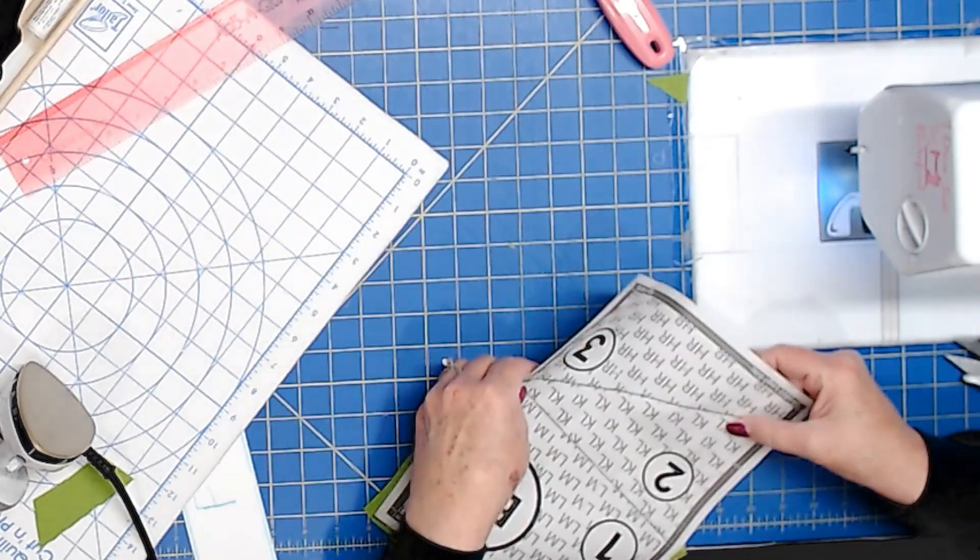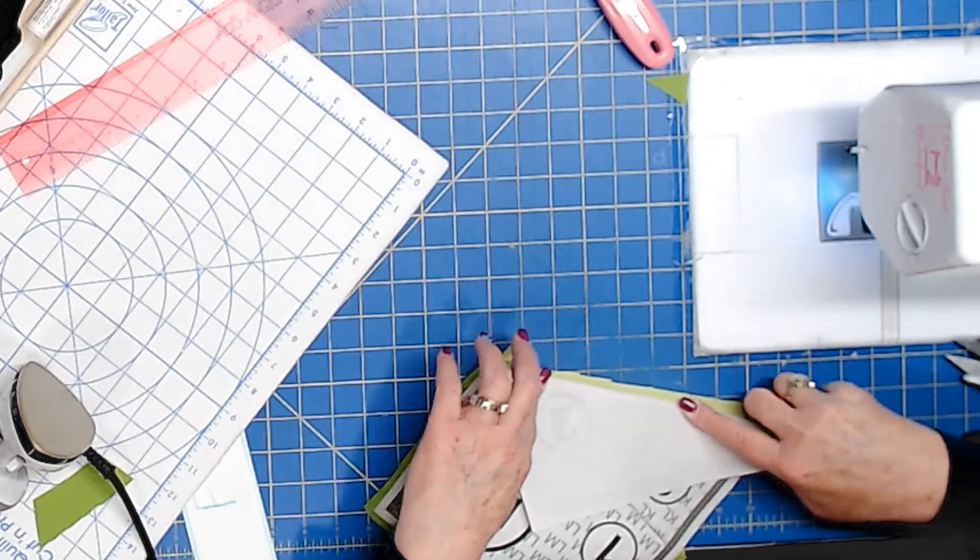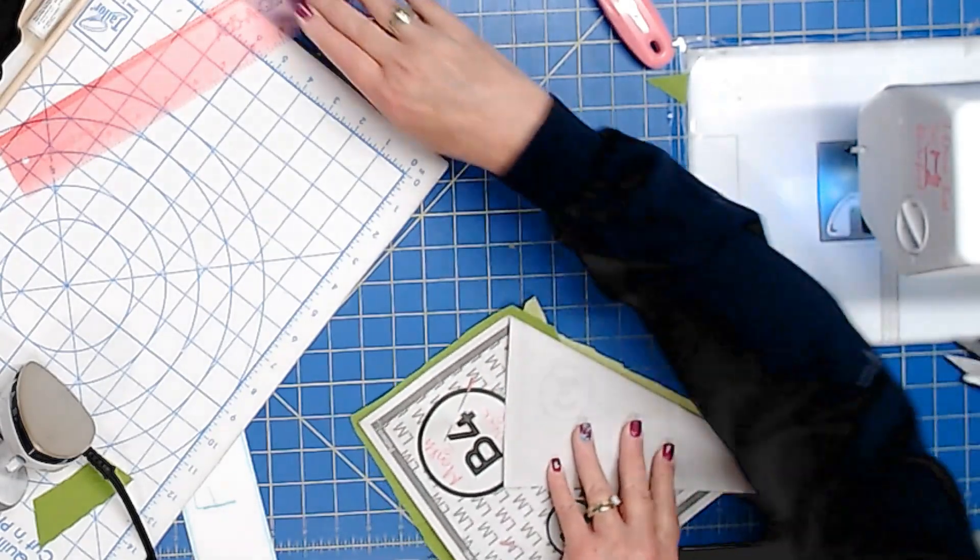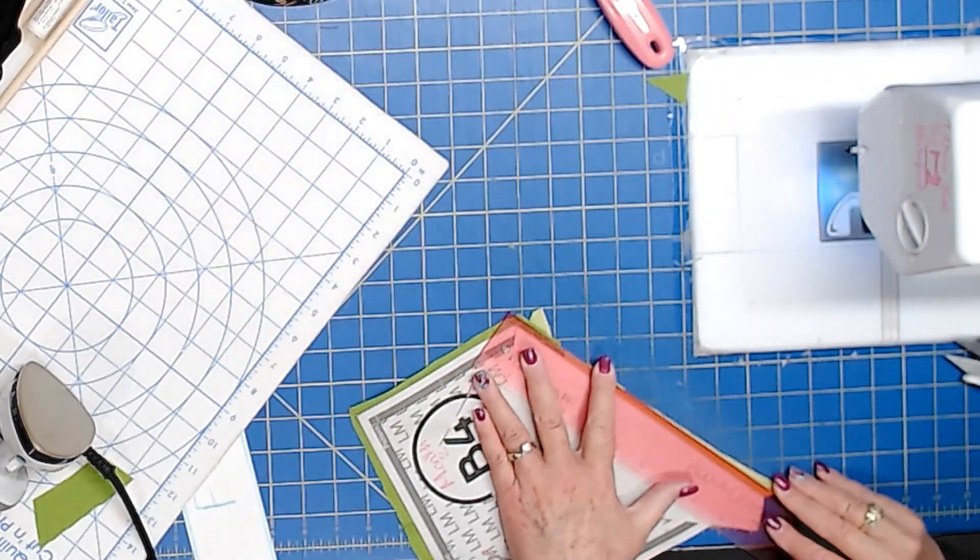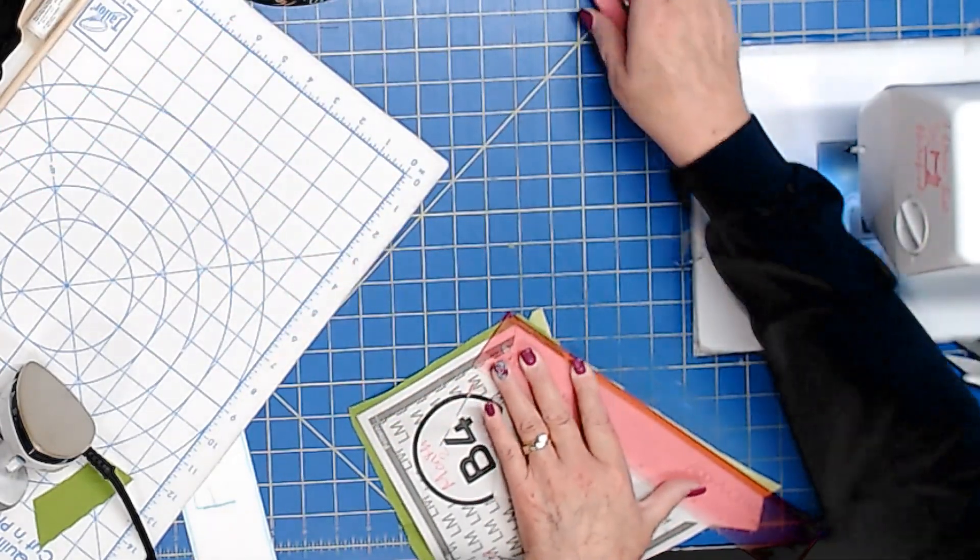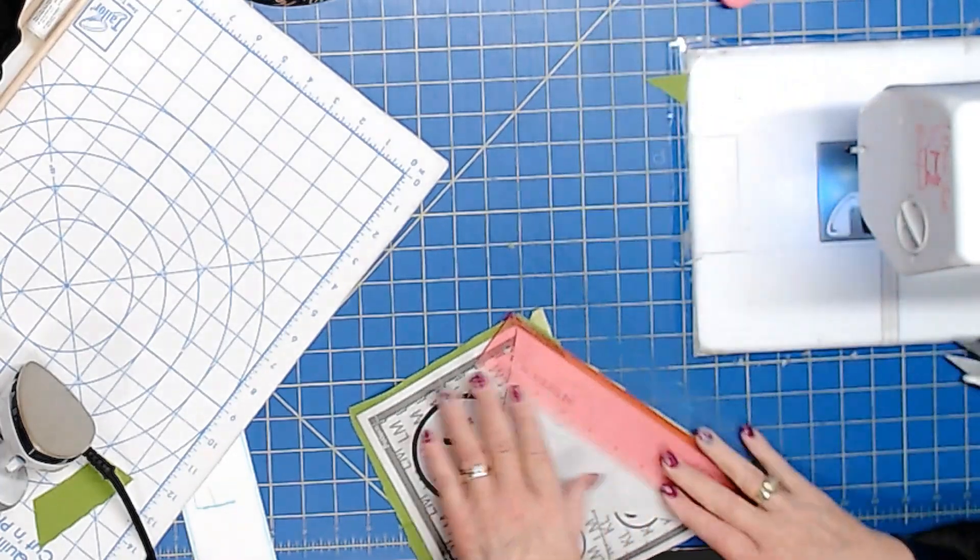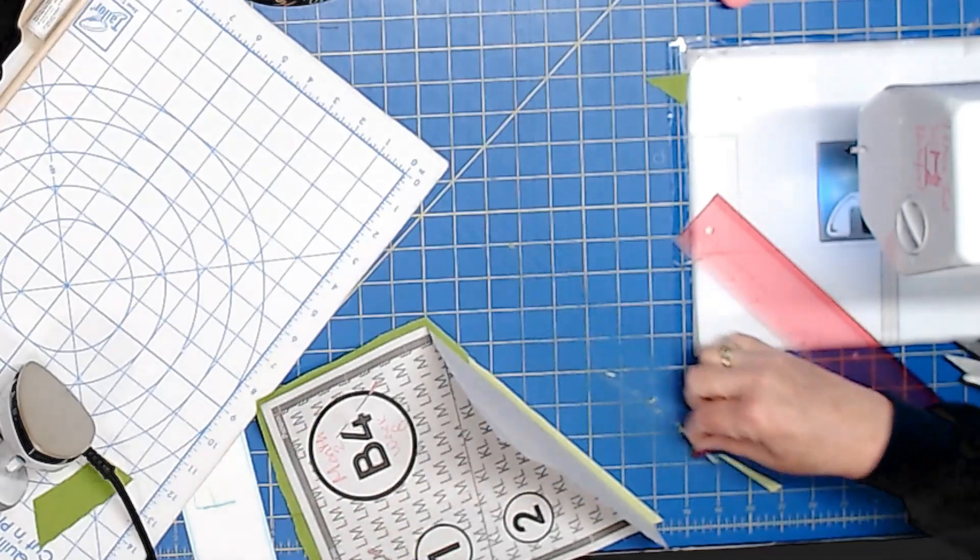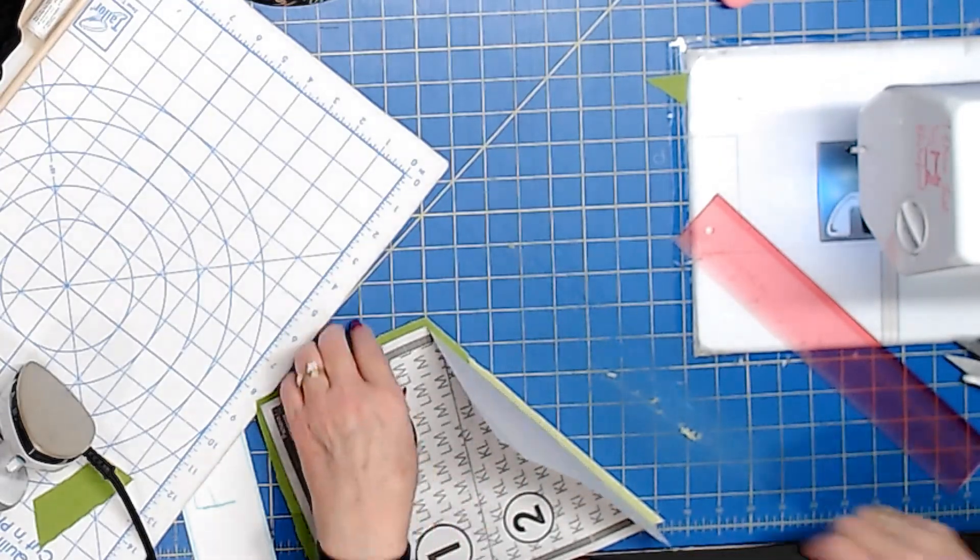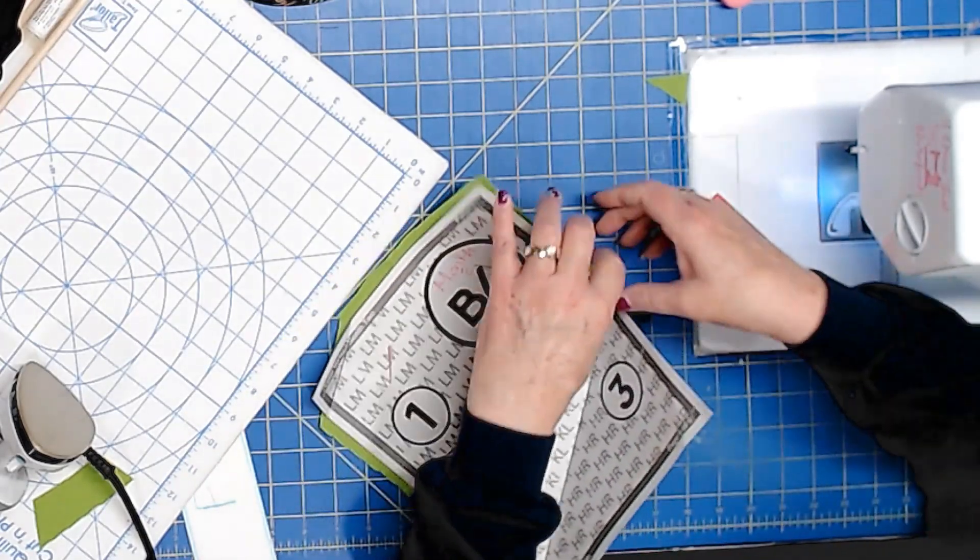Now we're going to go right here and we're going to fold back. As you can see that's a little bit wonky, so the easiest way to get that straight is go ahead and use your rotary cutter and trim that little bit off. It's not going to make a big difference but it does for me.